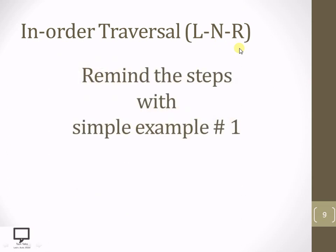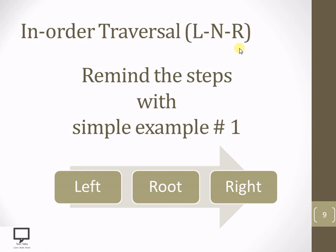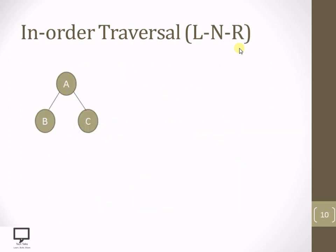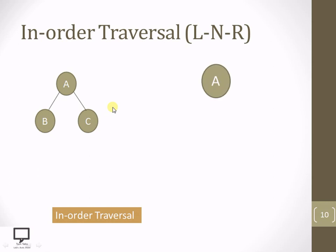Now let's start with Example 1. The steps are left, root, right. Starting from root node A — A is having a left child, so step down to B and make B the root node. B is a leaf node, so no left child is present. Process the root node B. No right child is present for B either.